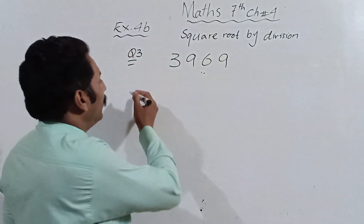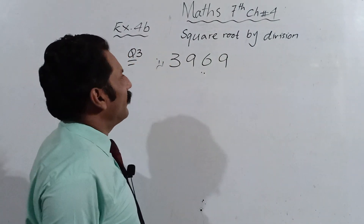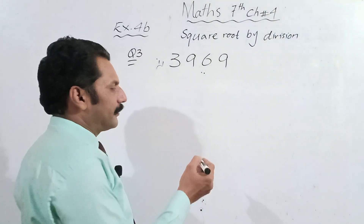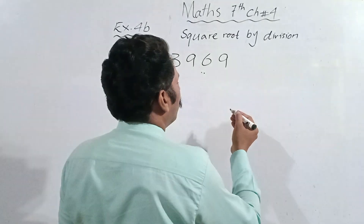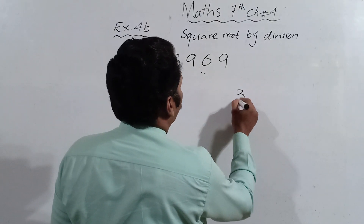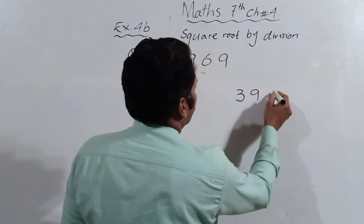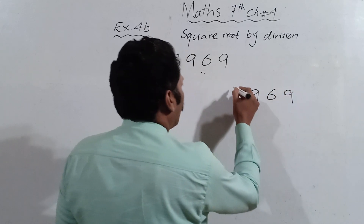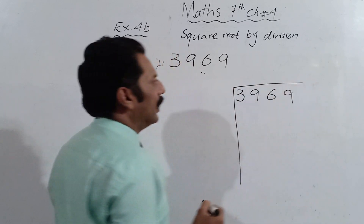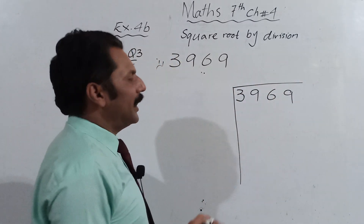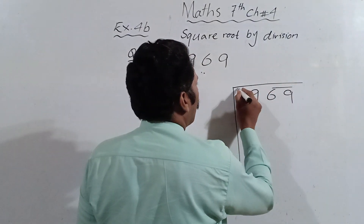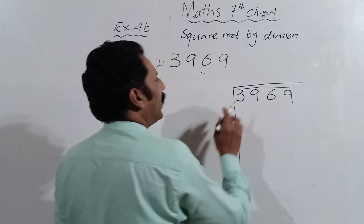Question number 3, part number 1: find the square root of 3969 by division. We will write 3969 and then draw the lines. The first step is that we will make the pairs — the pair of 69 and the pair of 39.